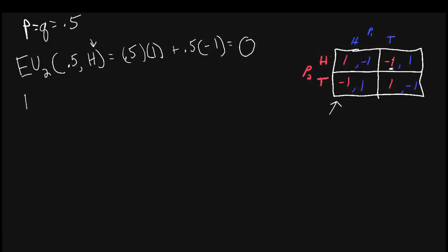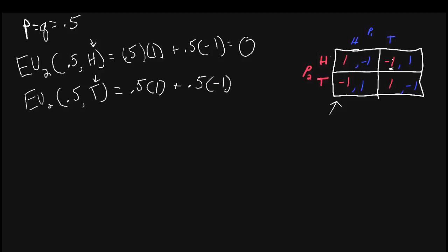How about the expected utility for player 2 when player 1 randomizes with probability 0.5 and player 2 plays tails? Again, this is relatively straightforward. 50% of the time player 1 will play tails, so player 2 will earn a payoff of 1. But 50% of the time player 1 will play heads, and because player 2's strategy is fixed at tails, they'll get negative 1. And of course, this is equal to 0.